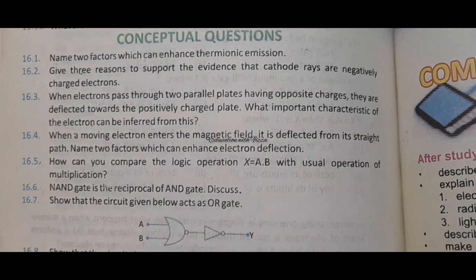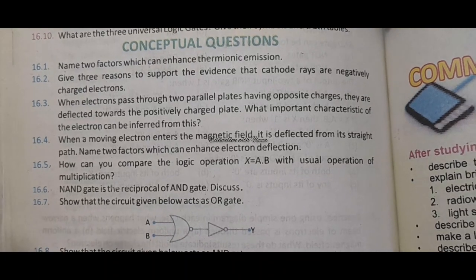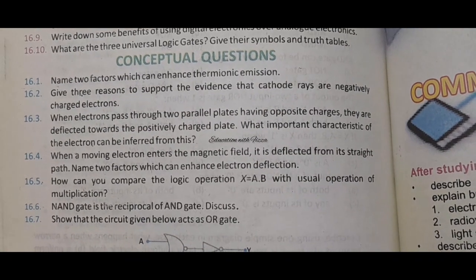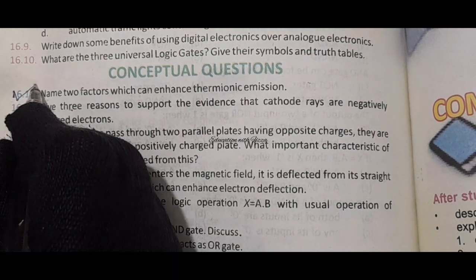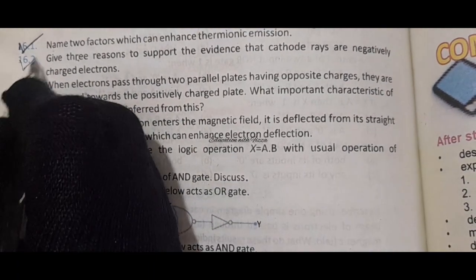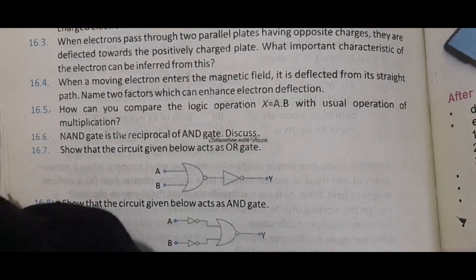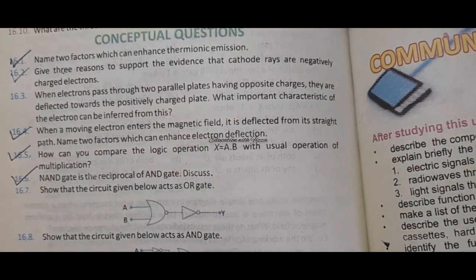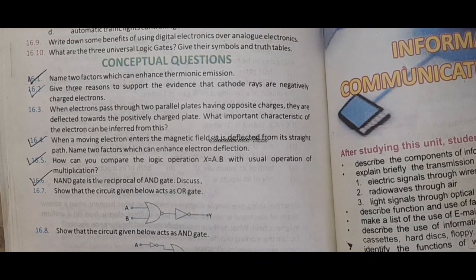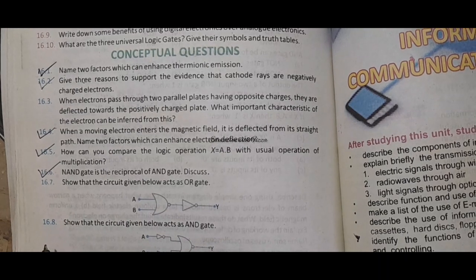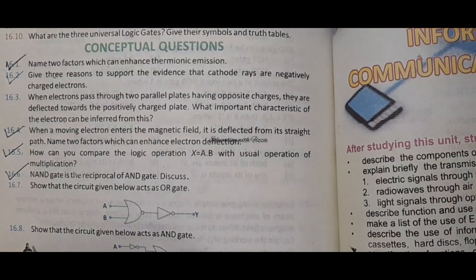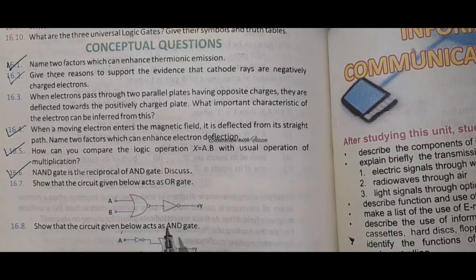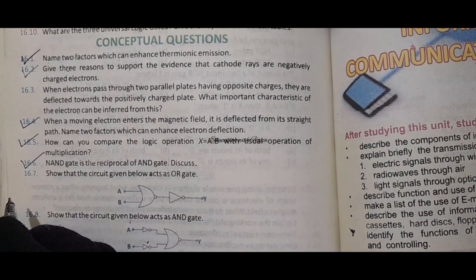If you try, try to learn all conceptual questions from all chapters properly before the paper. If you don't want to learn all of them, at least make sure you learn these. The important conceptual questions are 16.1, 16.2, 16.5, 16.4, and 16.6 - these you must do. The remaining ones you can skip. The other questions here have simple short answers - if you want to do them you can, but the important ones I have told you.